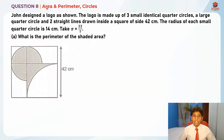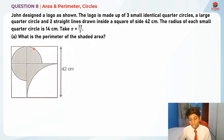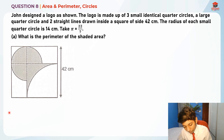So this is Question 8, and it tests us on area, perimeter, and circles. This question has two parts: Part A and Part B. So let's read the question for Part A first. John designed a logo as shown — all of this information is important.